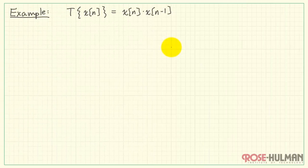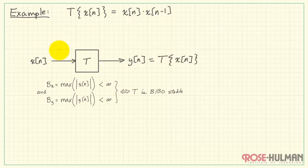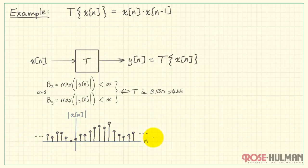Let's try to apply this notion to a couple examples. In the first example, we have a system that's formed as the current input times the previous input. And to picture this, let's have the absolute value of x of n looking like this picture. And let's imagine that this stem sticking up here is the bound, b_x.